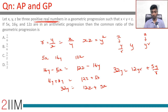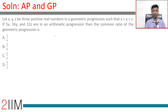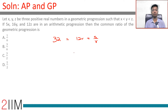Cancelling y, we get 32 equals 12r plus 5 by r. Multiplying by r, we get 32r equals 12r squared plus 5.